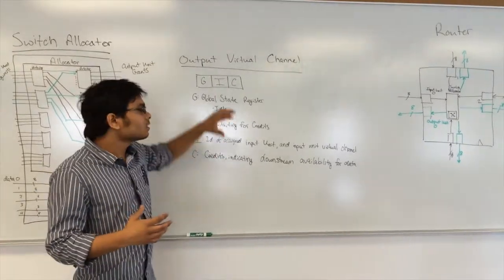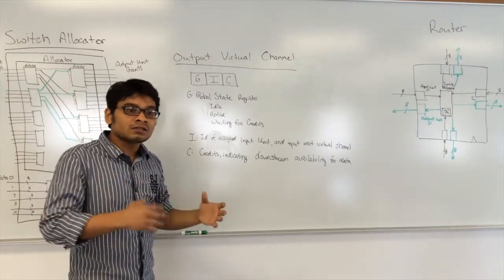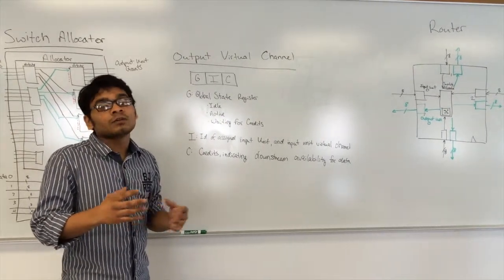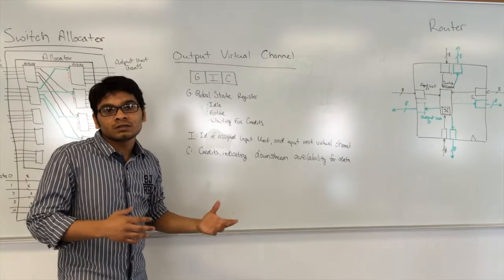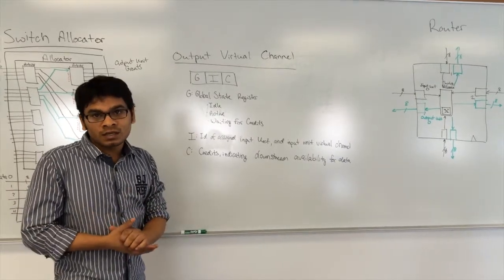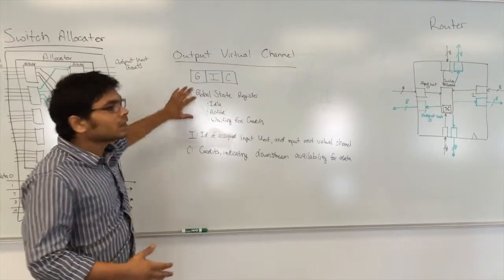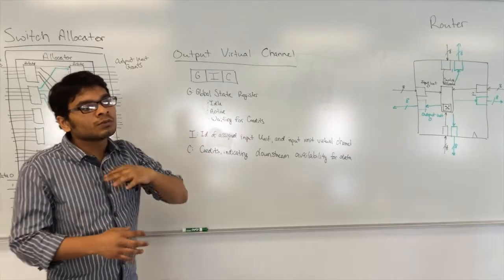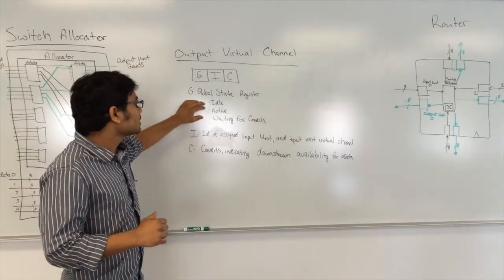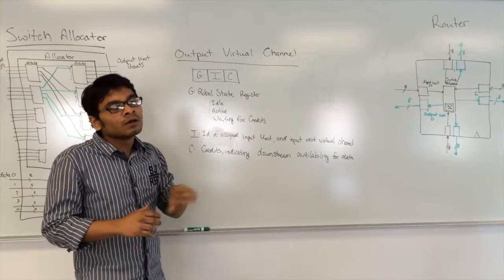as long as it is not allocated to any particular packet being transferred from the input port. As soon as this particular virtual channel is allocated to a packet — this information it gets from the virtual channel allocator — the state of the global state register changes to active.